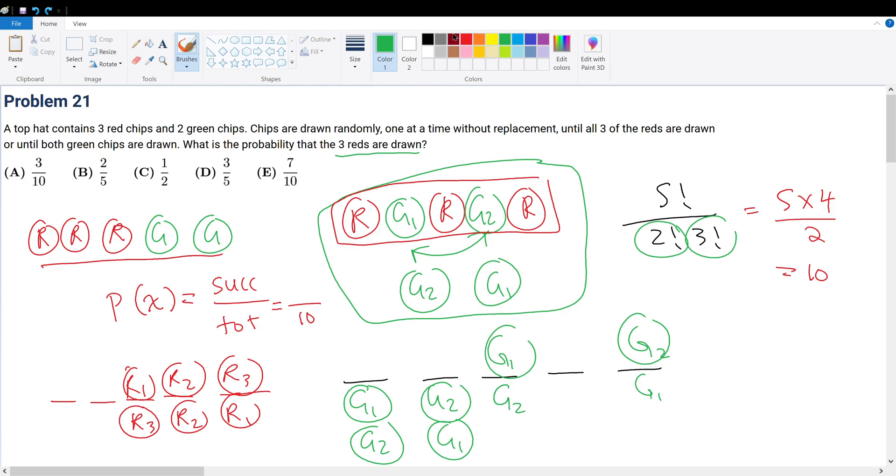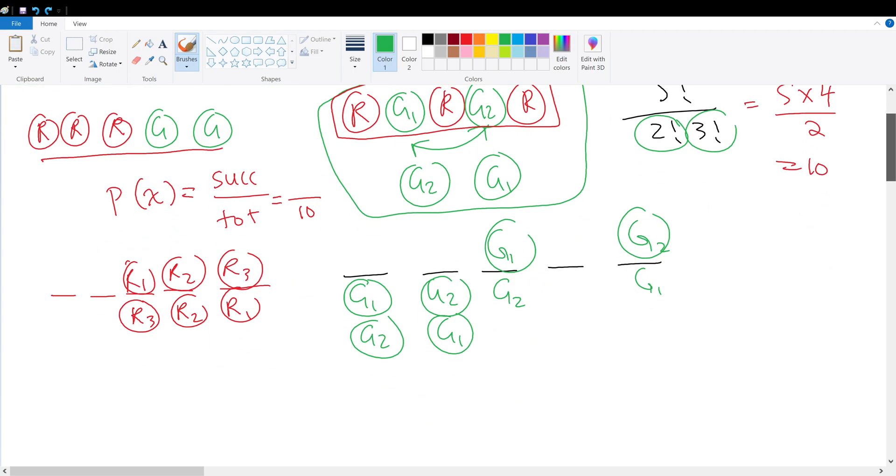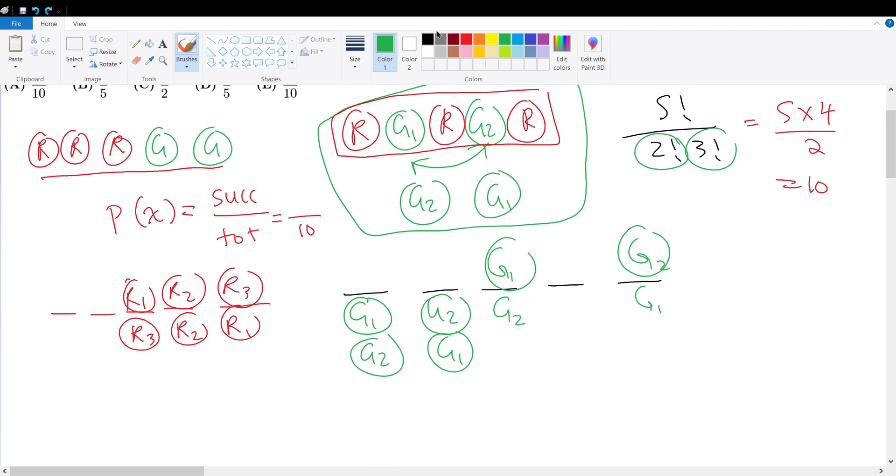But what about the numerator? Well, the numerator here is the number of successful ways to draw three red chips in total. We don't care about drawing two green chips. We care about getting the three red chips. So how many ways are there? The idea here is that whenever I draw three red chips, the game ends. So how many ways are there? Well, obviously, we can go RRR, or we can go GRR, or we can go RGRR, or we can go RRGR.